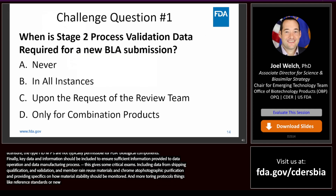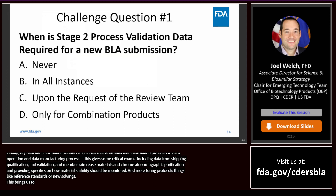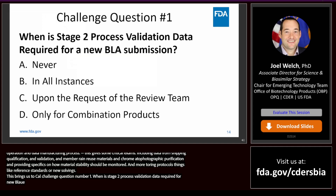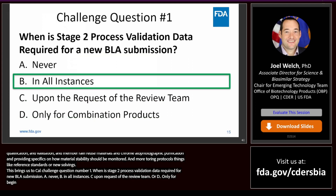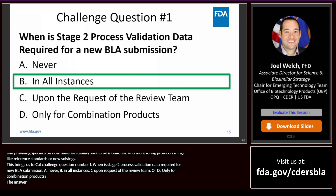Challenge question: when is Stage 2 process validation data required for a new BLA submission? A, never; B, in all instances; C, upon the request of the review team; or D, only for combination products? The answer is B — in all instances. With that, I thank you for your time and invite Dr. Christopher Downey to continue the presentation.